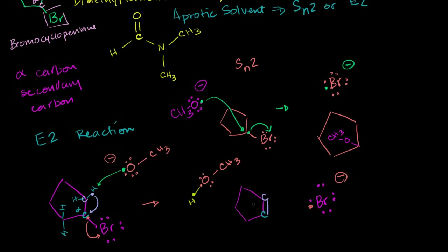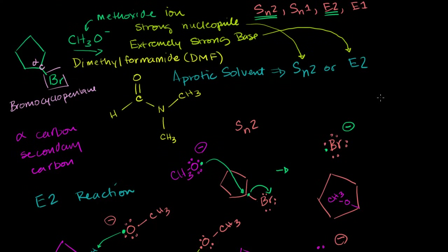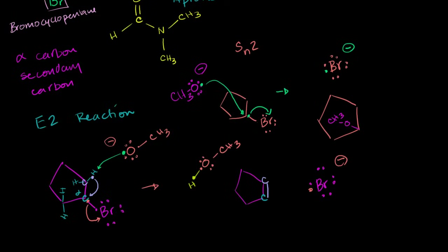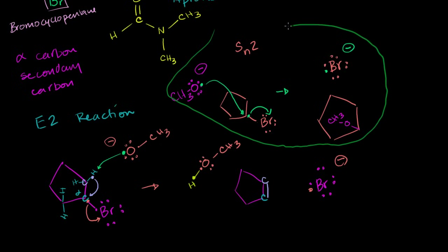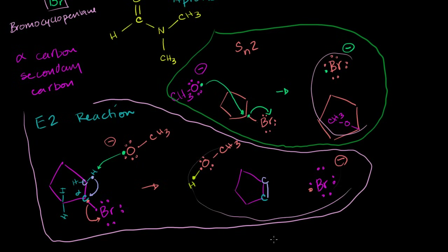So to go back to the original question: which reaction is likely to occur? It's actually both SN2 and E2. You would see a mix of both occurring because you have all the environmental factors that enable both. So in whatever vessel you're running the reaction in, you would see the SN2 reaction occurring and you would also see the E2 reaction — and you would see some of all of those products.